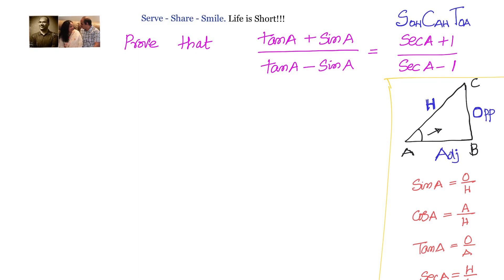In this problem, we have tan(a), sin(a), and secant(a). Our approach is to convert the left hand side into sin and cos, take LCM and simplify. If needed, we will also work on the RHS, convert it into sin and cos, and show that LHS equals RHS.